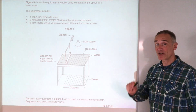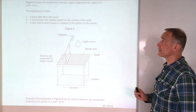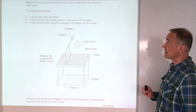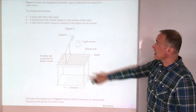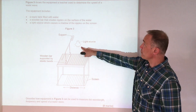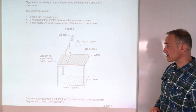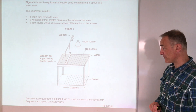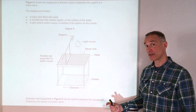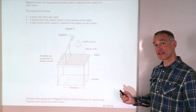In your exam you need to be able to write this method out. Here's a question: Figure three shows the equipment a teacher used to determine the speed of a water wave — a ripple tank filled with water, a wooden bar creating ripples, and a light source causing a shadow of the ripples on the screen. Describe how the experiment can be used to measure the wavelength, frequency, and speed of the water wave. Six marks. Notice it says 'describe', so it's bullet points of the method. Pause the video and have a go.